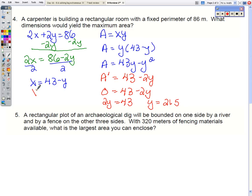So plugging that back in to find x, we get x is also 21 and a half. So the final dimensions is a square. That's 21 and a half by 21 and a half.